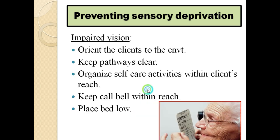For impaired vision, orient the patient to the environment — where the toilet, light switch, and call bell are located. Allow the patient to touch nearby objects. Keep pathways clear of clutter to prevent falls. Arrange self-care items within the client's reach, keep the call bell nearby, and keep the bed low.